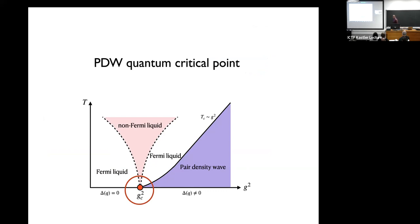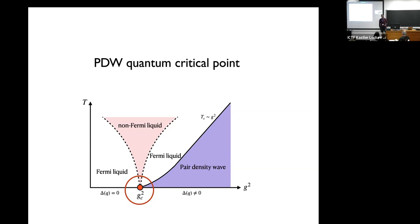On the question about the phase transition: at finite temperature, it's a completely conventional continuous transition as Ginzburg-Landau mean-field theory would predict. The coefficient of the quadratic term at finite momentum vanishes at Tc, and there's a quartic term required for stability.